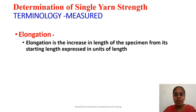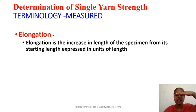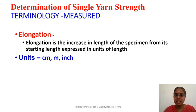Elongation is the increase in length of the specimen from its starting length. The two jaws move apart and this increase in length is called the elongation. It is denoted in centimeter, meter, and inches, and may be converted into percentage.